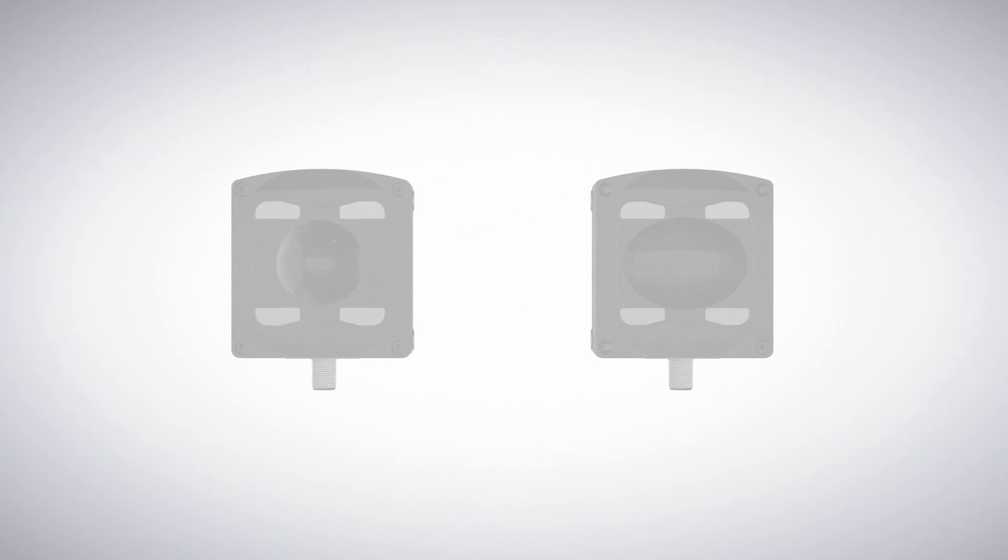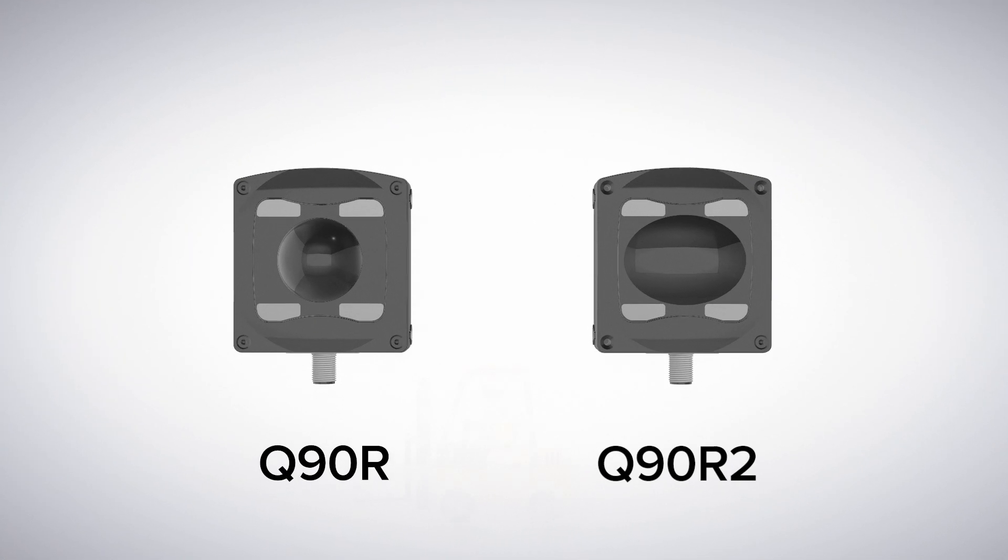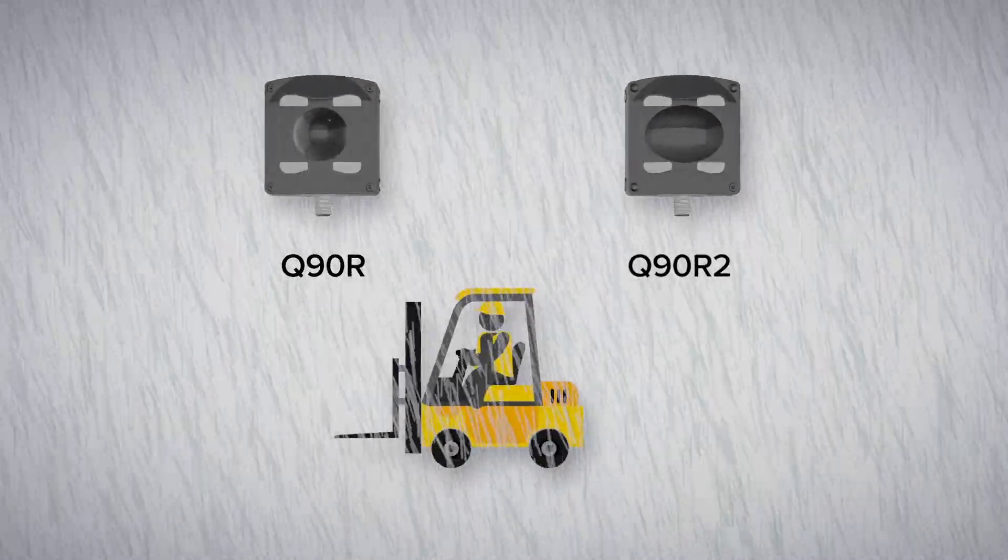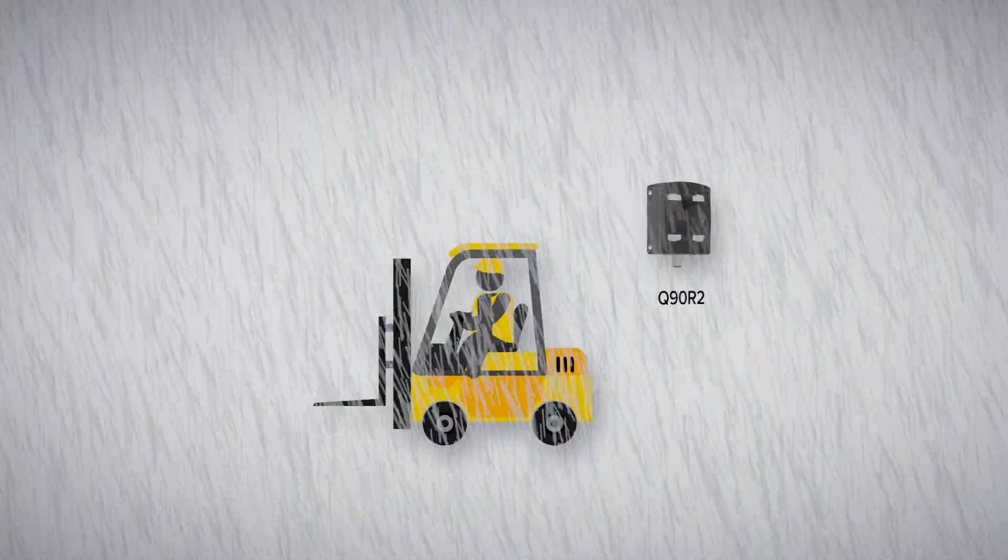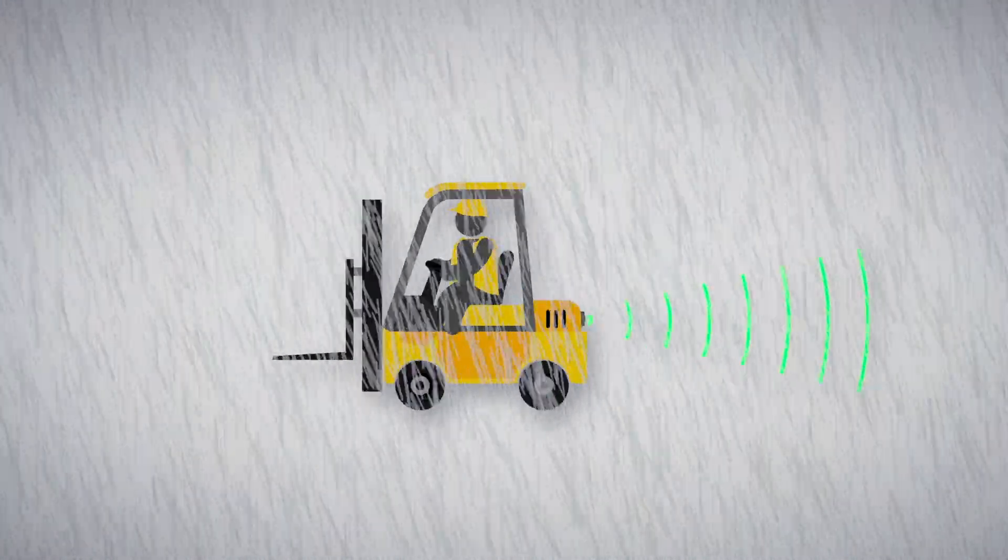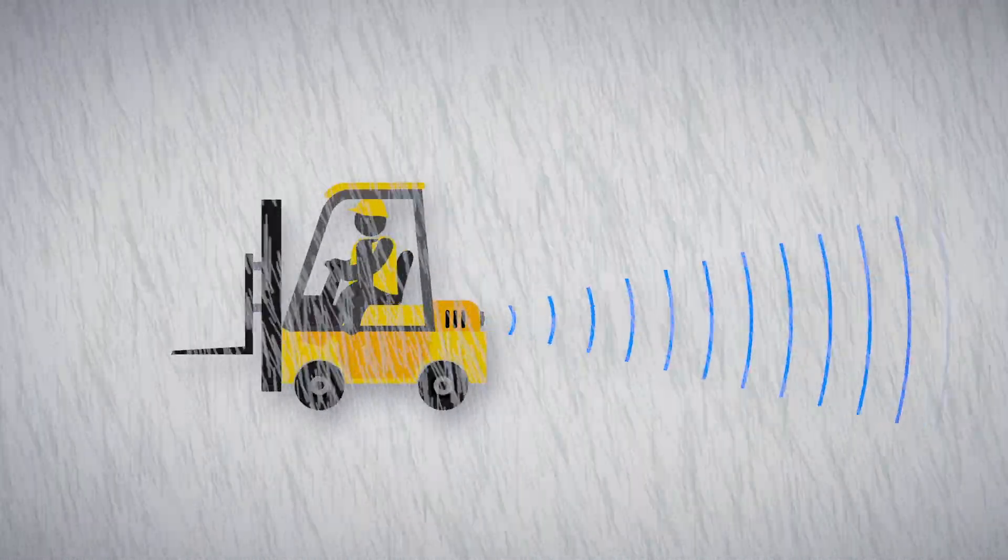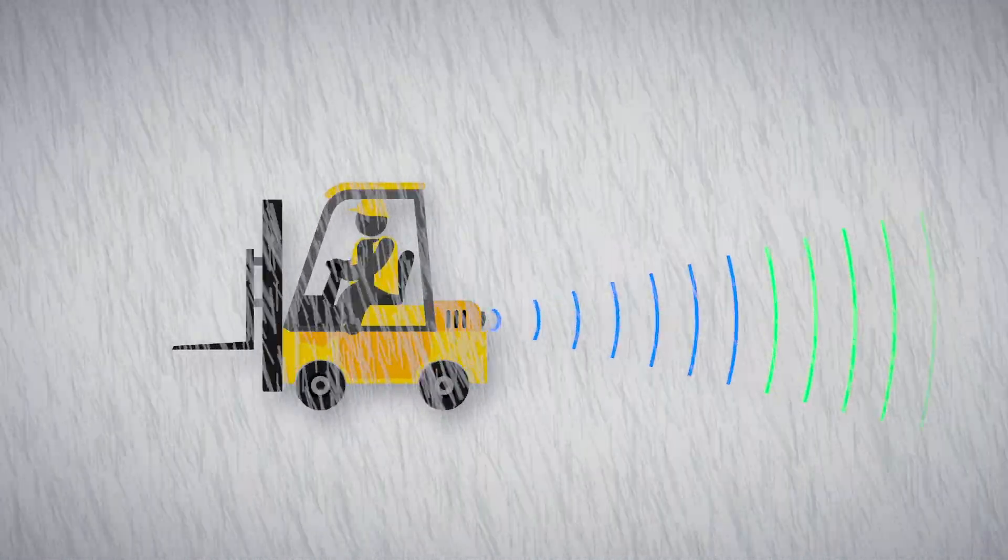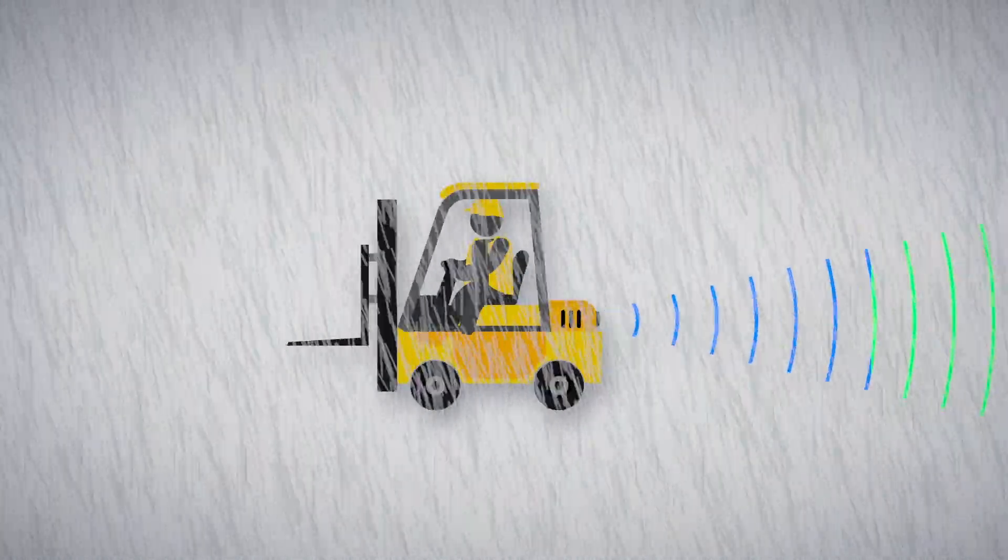The Q90R series can be used in multiple configurations for on-board vehicle use, such as forklift speed controls. First, use the Q90R2 as a collision avoidance solution. Configure the multiple zones at different distances so that the closer the hazard, the greater speed restrictions are applied.